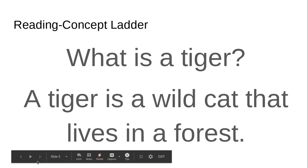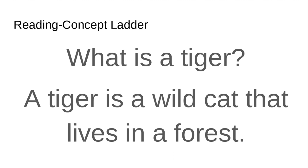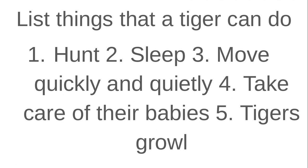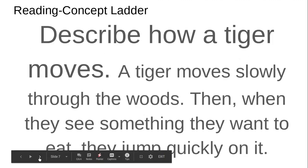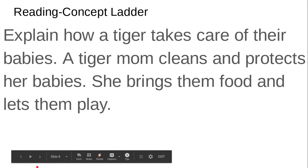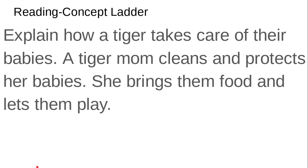So last time we had a tiger story, and I asked you a series of questions about tigers. I told you I was going to give you the answers this time. What is a tiger? A tiger is a wild cat that lives in a forest. List things that a tiger can do: hunt, sleep, move quickly and quietly, take care of their babies, and tigers growl. Describe how a tiger moves: a tiger moves slowly through the woods, then when they see something they want to eat, they jump quickly on it. Explain how a tiger takes care of their babies: a tiger mom cleans and protects her babies. She brings them food and lets them play.